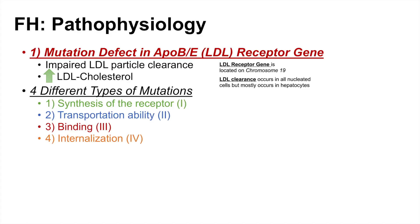Class 4 is an internalization mutation — the LDL receptor is present and can bind to LDL, but it is not able to completely internalize the cargo into the cell. These are the four different types of mutations of the LDL receptor gene that can lead to familial hypercholesterolemia.